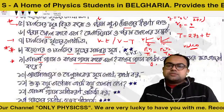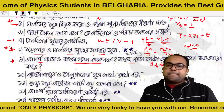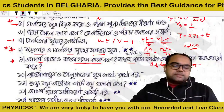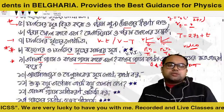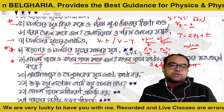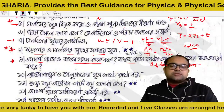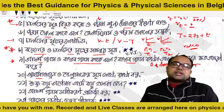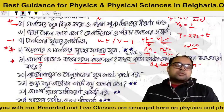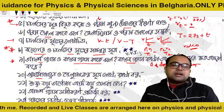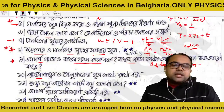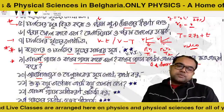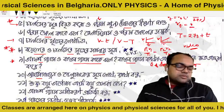At high temperatures and high pressures, the gas deviates from ideal behavior. The gas molecules occupy space proportional to their volume, and when the gas becomes different from ideal, it behaves differently. Please note this down carefully.